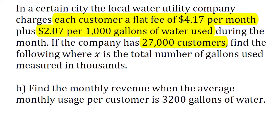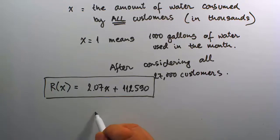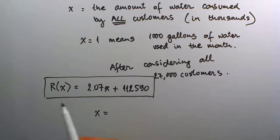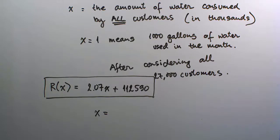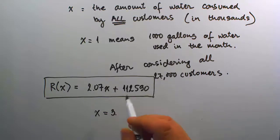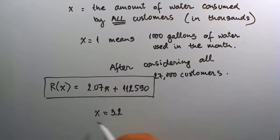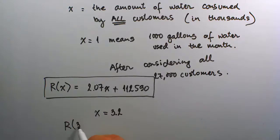Part B can be a little tricky. A common mistake I see is students reading '3,200 gallons per customer' and immediately substituting x = 3.2 into the revenue function to find R(3.2). I want to make clear that this is actually a misunderstanding.